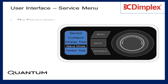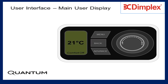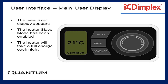The service menu appears. Press the back button to return to the main user display. The main user display appears. The heater Slave Mode has been enabled, and the heater will take a full charge each night.